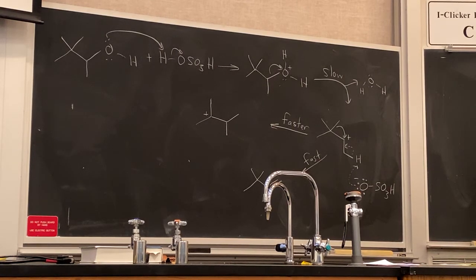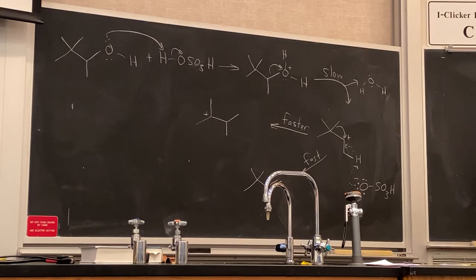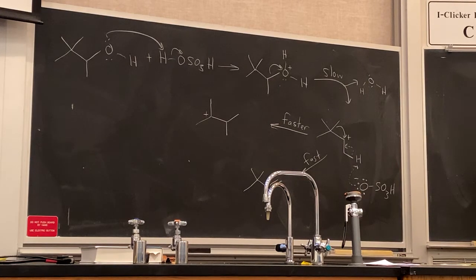The reason for that is that it is a unimolecular process — it only requires one molecule and does not require a collision. Whereas for the elimination process to occur, we have to have our base collide with our carbocation. So the unimolecular process is faster than the bimolecular process. If a carbocation rearrangement can happen, it will happen, and the major product will always come from that rearrangement. But it will only happen to generate more stable carbocations.